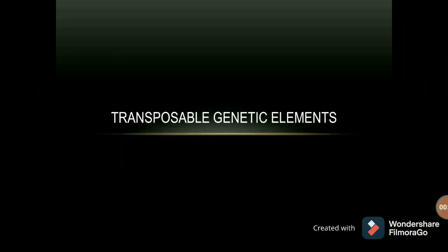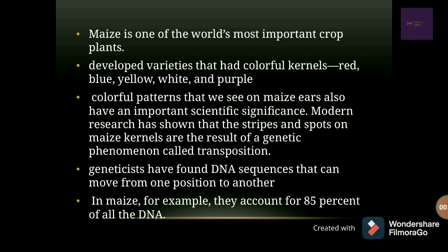This is Swaz Yoshi and today we are going to talk about transposable genetic elements, also called jumping genes, transposable elements, mobile genetic elements, or transposons. Maize is one of the world's most common and important crops. There are different varieties with differently colored kernels — red, blue, yellow, white, purple, etc. The colorful patterns on maize ears are of important scientific significance. Modern research has shown that the stripes and spots on maize kernels are the result of a genetic phenomenon called transposition.